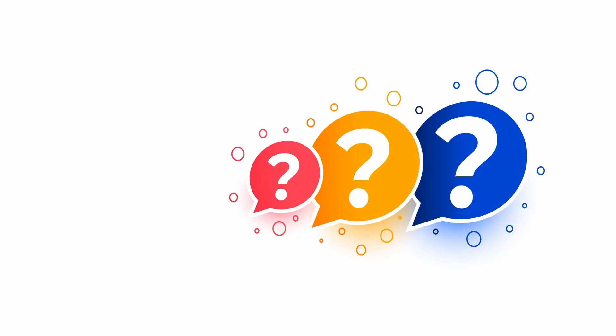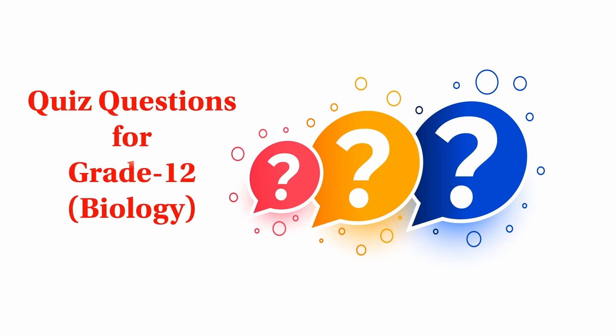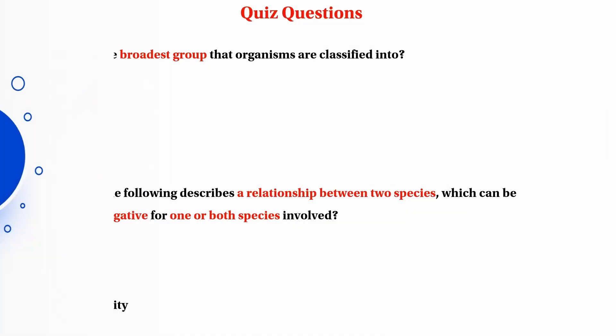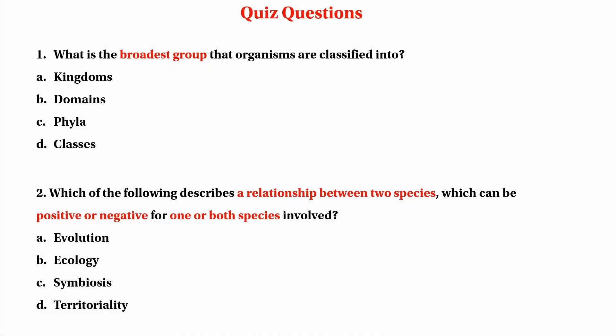Quick question for Biology. Question number one: What is the product group that organisms are classified into? This is the most important thing to know.